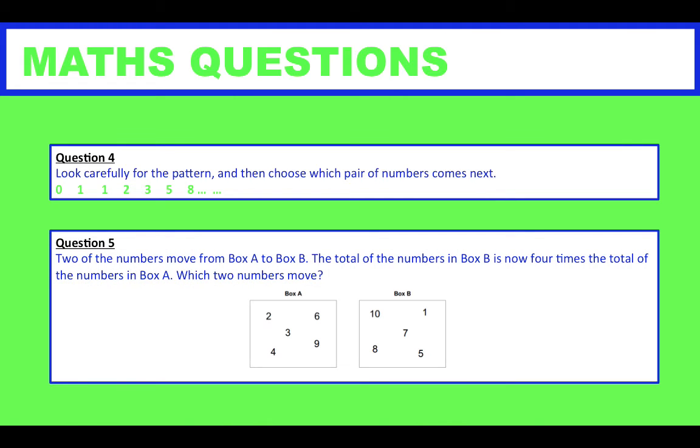Question 5: Two of the numbers from box A have moved from box A to box B. The total of the numbers in box B is now 4 times the total of the numbers in box A. Which two numbers from box A have moved into box B?